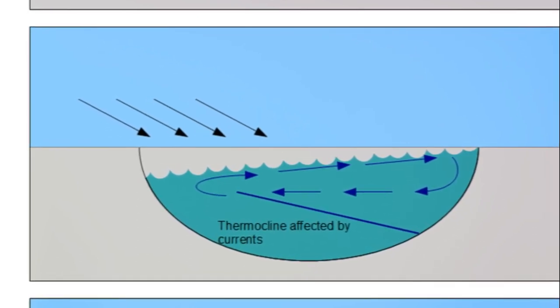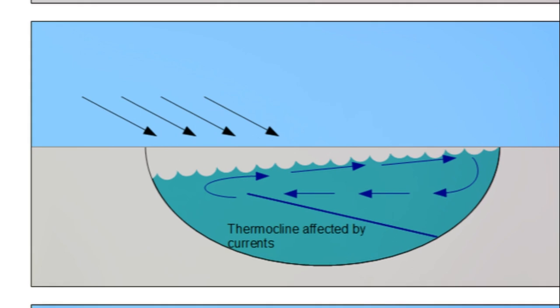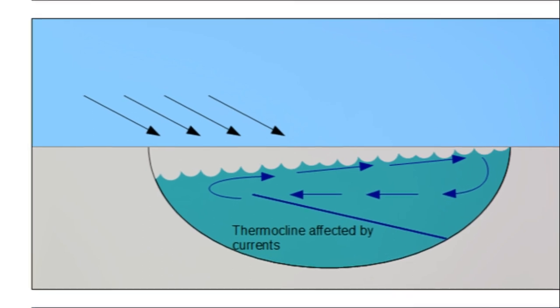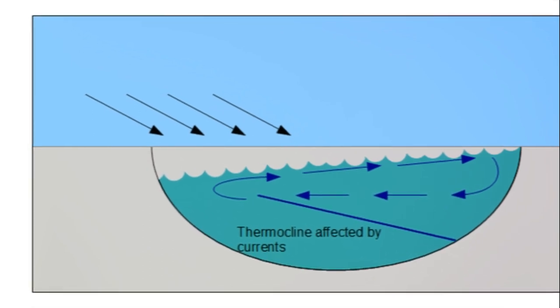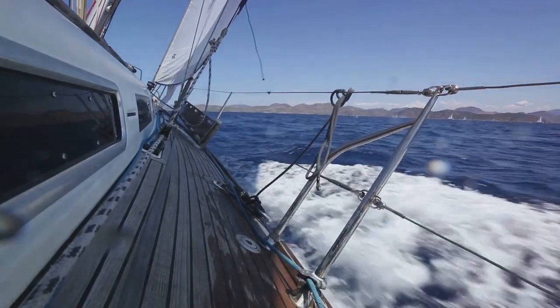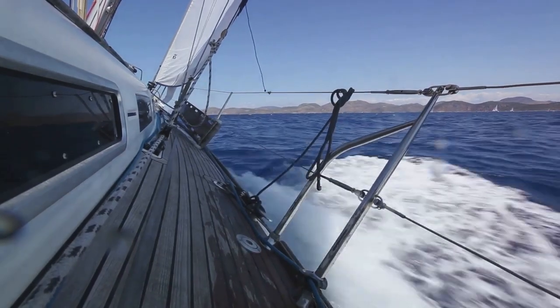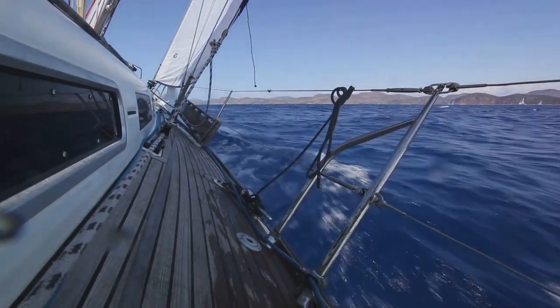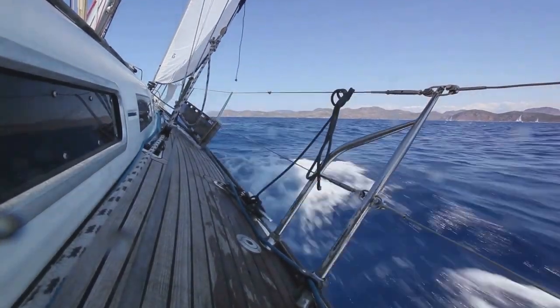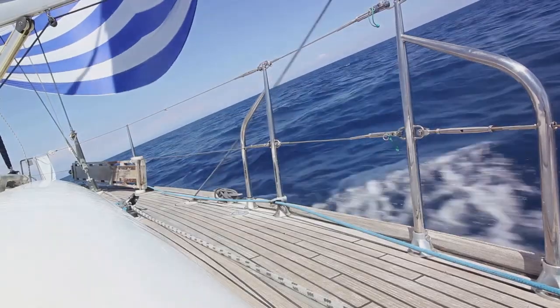And then there are seiches — oscillations in enclosed bodies of water like lakes or swimming pools, caused by the shaking of the Earth. While they may not be as dramatic as a tsunami, seiches can still cause significant damage and pose a threat to those nearby.